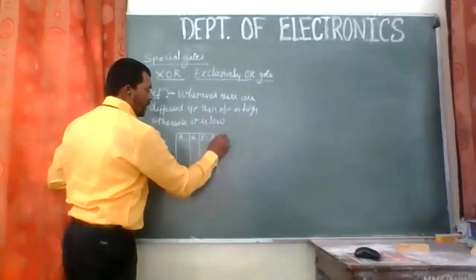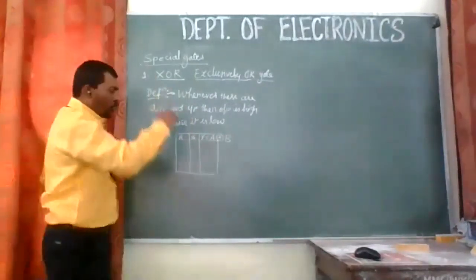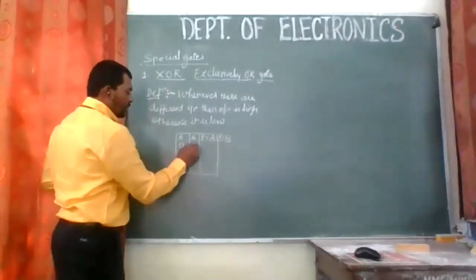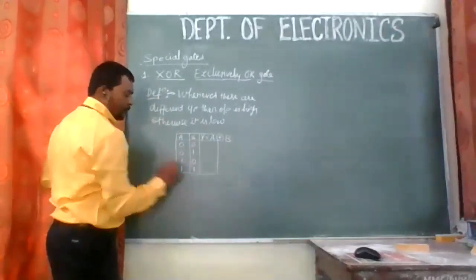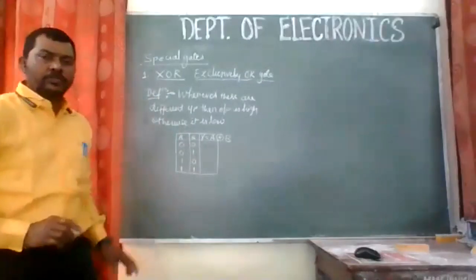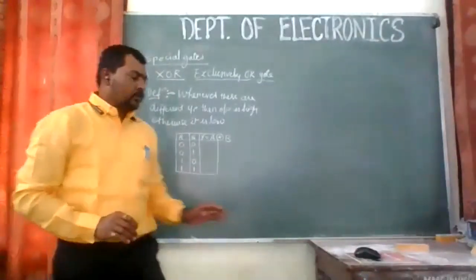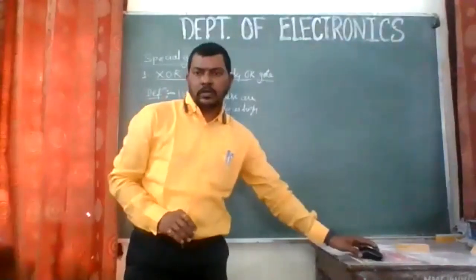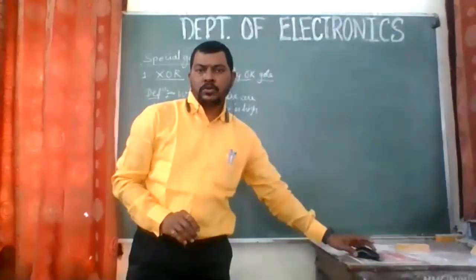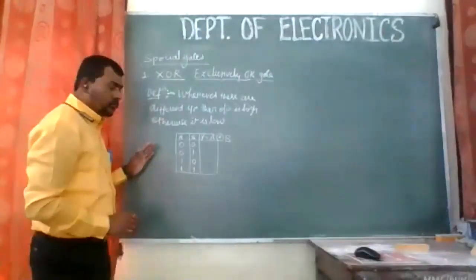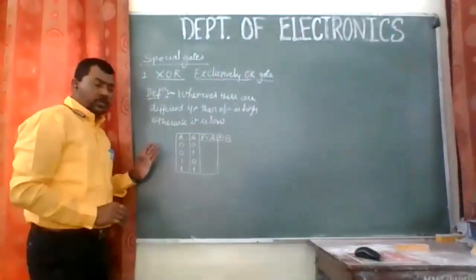The expression is Y = A XOR B. This is the symbol for XOR — a plus sign inside a circle. The probabilities for the inputs are: 0,0 — 0,1 — 1,0 — and 1,1. These are the probabilities in which we are expecting to give the inputs.